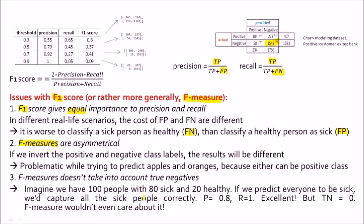And this can be a problem because imagine we have 100 people and 80 of them are sick and 20 are healthy. Now we predict every single one of them to be sick. Then we would definitely capture all the sick people correctly because since we are predicting everyone to be sick all the 80 people will be correctly classified. And if you look at the precision and recall formula we will get a precision of 0.8 and recall of 1. And if you look at the F1 score as well that would be very close to 90% which on paper sounds excellent.